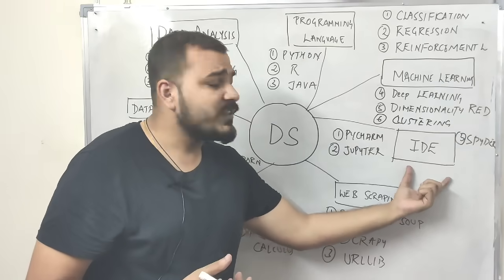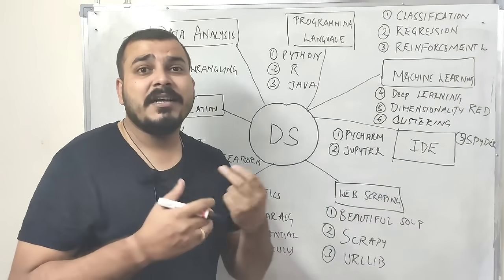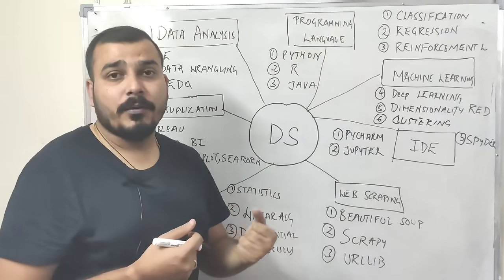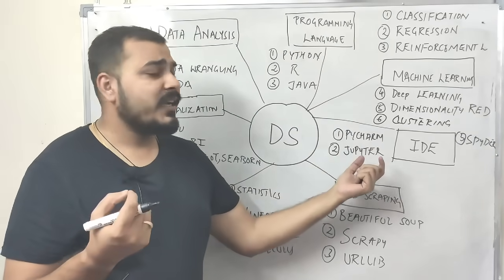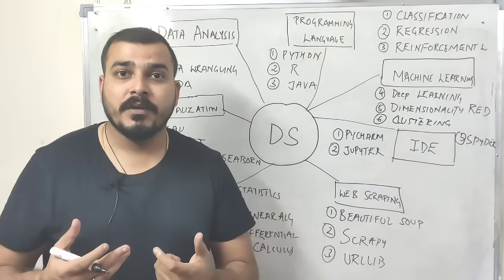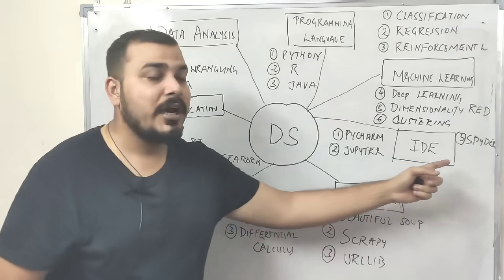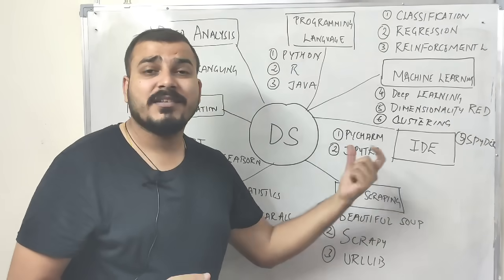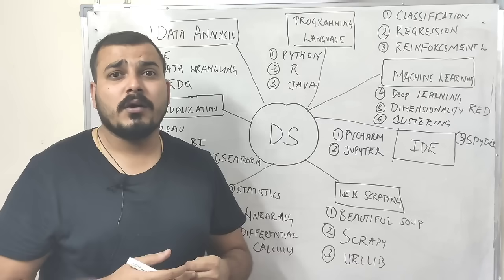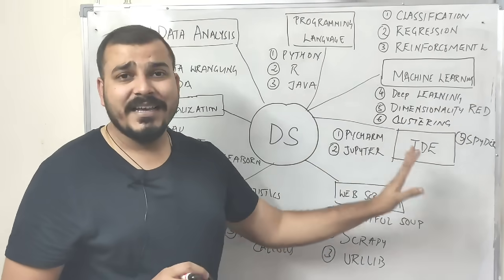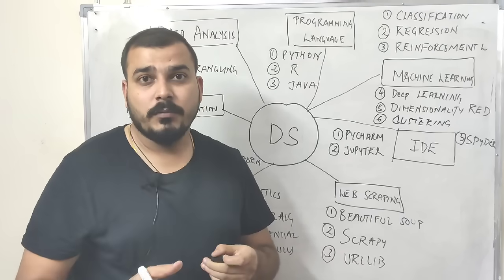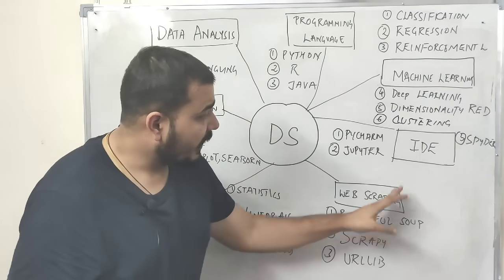You need to know some tools like IDE, which is the integrated development environment. What kind of editor are you using for coding Python and R? For Python, there's PyCharm which is very nice, Jupiter, and also Spider. For R programming language, you have R Studio, and for Python you also have Visual Studio, which is a very nice tool where you can write and debug your code. You need to have knowledge of one of these IDEs.